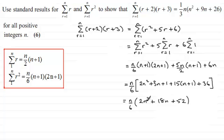And then I can see that I could divide through by 2, or pull out 2 out the front anyway. 2n over 6, which is going to be n over 3. And then I've got n squared, plus 9n, plus the 26. And that's what I had to show.